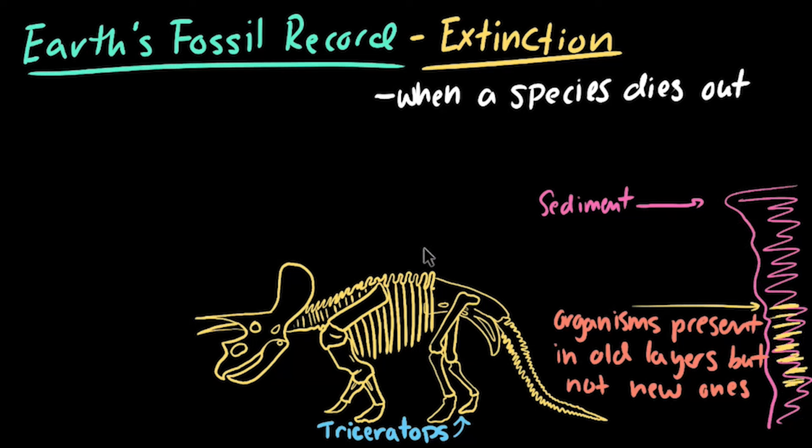For example, we only see Triceratops fossils in rock layers that are roughly 68 to 66 million years old. After this, we don't find any evidence of Triceratops fossils anywhere, and there certainly aren't any Triceratops living today.